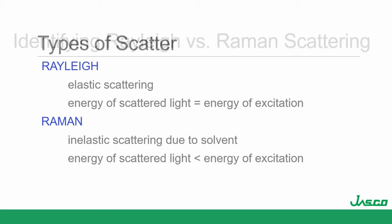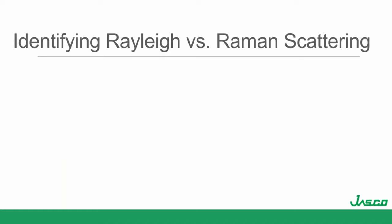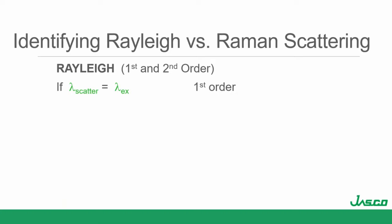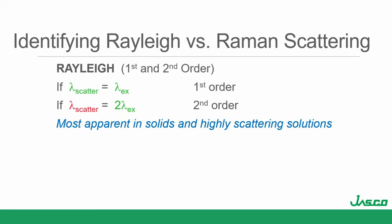The solvent is present in the greatest amount, and even though Raman is a very weak effect, it shows itself and can interfere in fluorescence — it shows up at energies of scattered light at longer wavelengths. How do we tell the difference between Rayleigh and Raman? Rayleigh can be first or second order scatter. If the scattered peak is at the excitation wavelength, it's first order. If we get a band at double the excitation wavelength, that's second order Rayleigh scatter — apparent in most solids and highly scattering solutions.